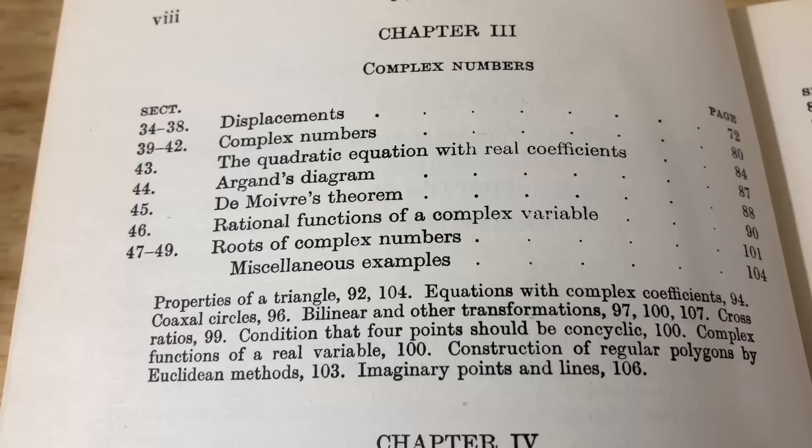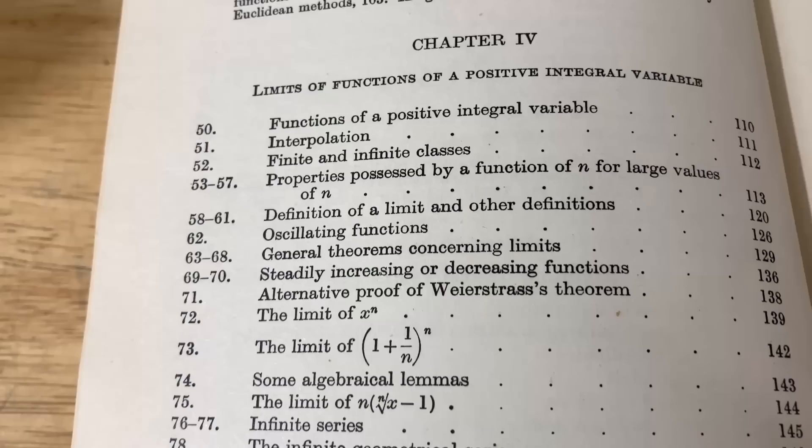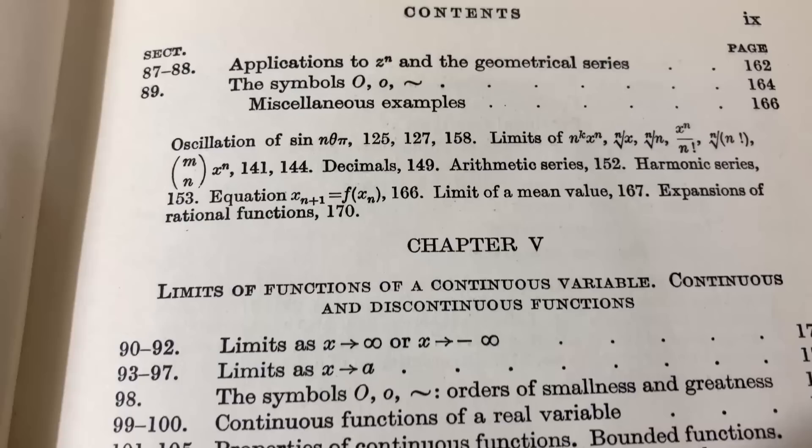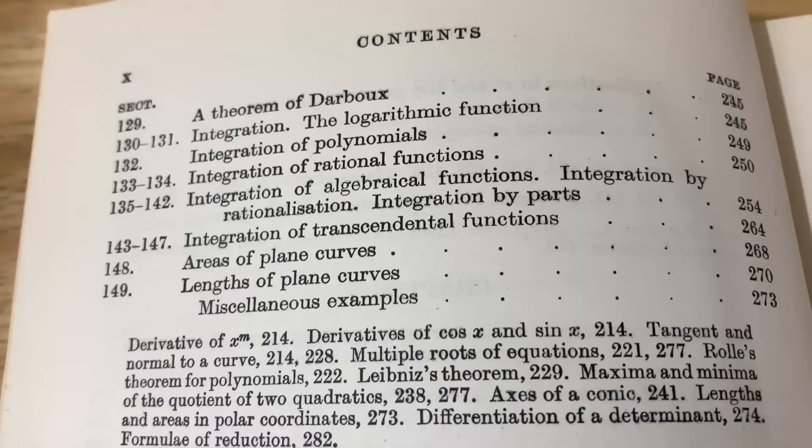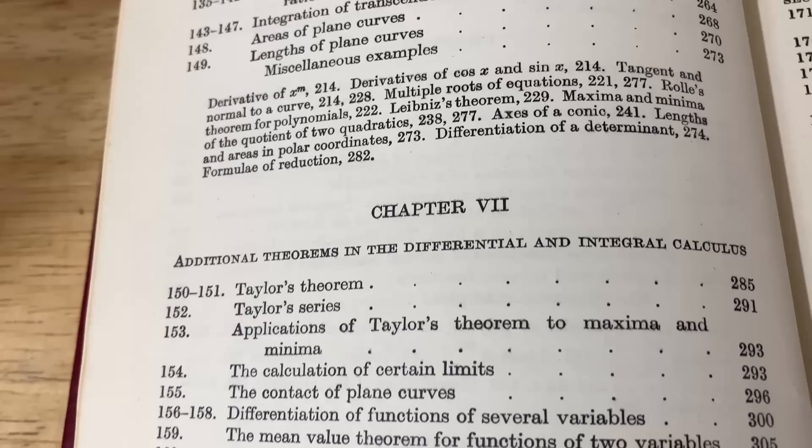So complex numbers, limits of functions of a positive integral variable, lots of little subsections, which I think is nice. Chapter five is on limits of functions of a continuous variable and continuous and discontinuous functions. Chapter six is on derivatives and integrals. This is quite a bit of mathematics for such a small book.